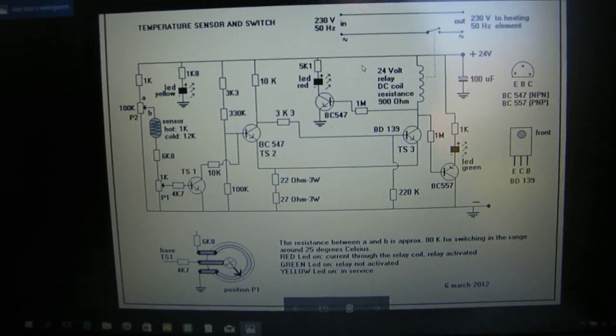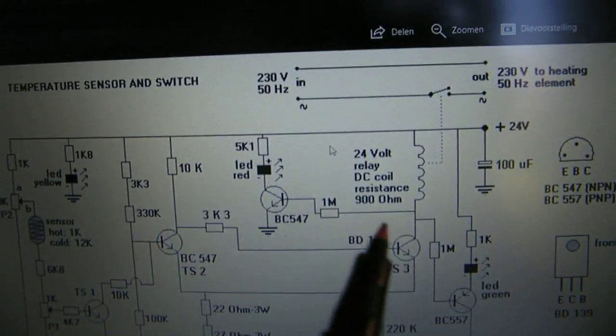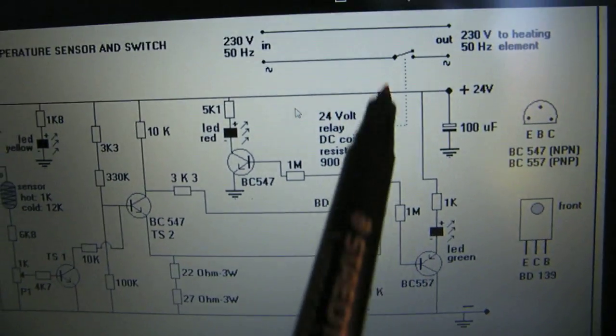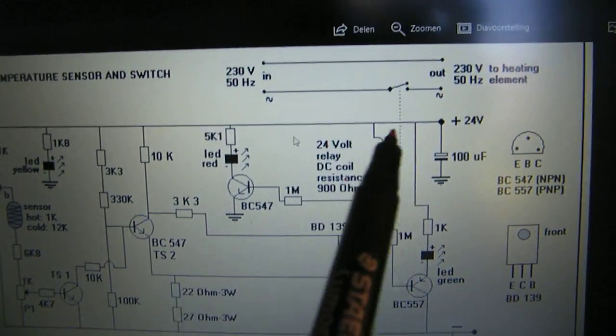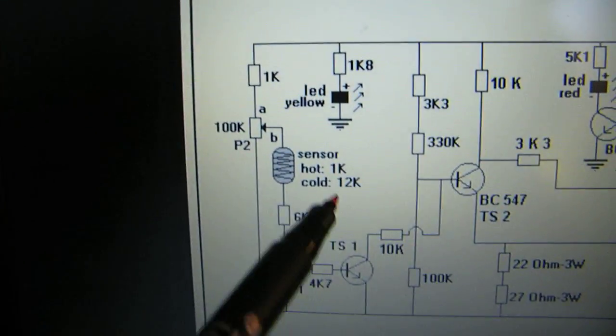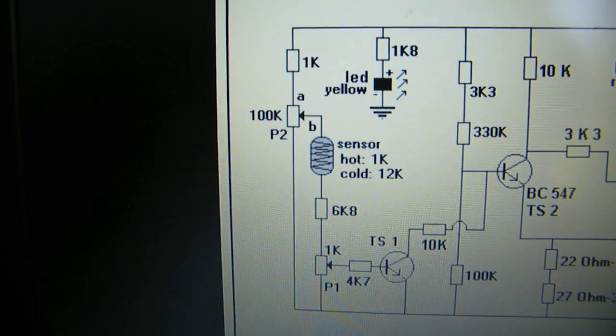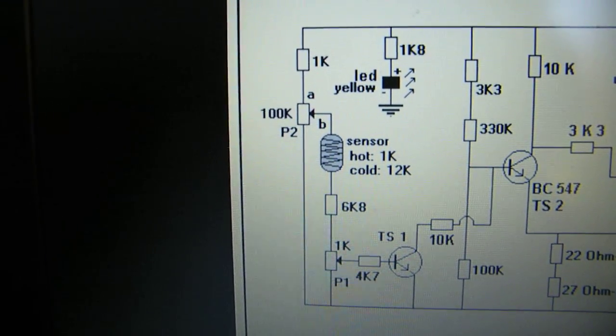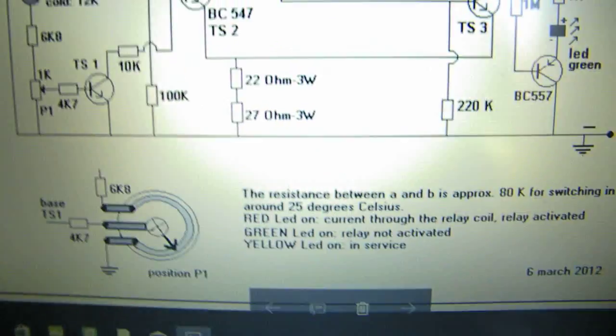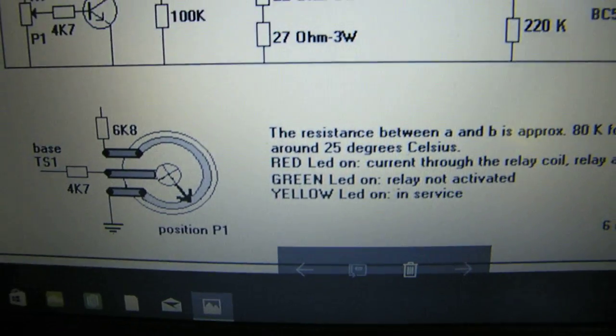And switches for instance a heater on and off. You can connect that heating element here on the mains, switch it on and off, and at the same time the heating element and the sensor are in the same water bath. That means that the water bath is kept at a constant temperature of approximately 25 degrees in this example.